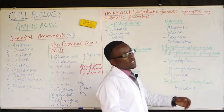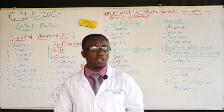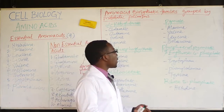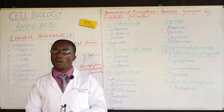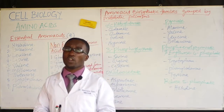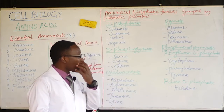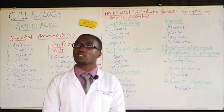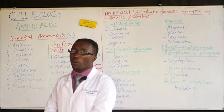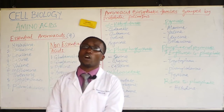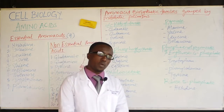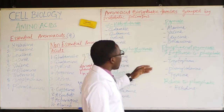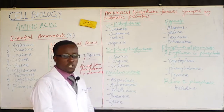Pyruvate is a common figure in metabolism and an important precursor in carbohydrate metabolism. It is one of the key byproducts in the glycolytic pathway and is shunted into the Krebs cycle for further ATP generation — where 32 ATP molecules are formed. From pyruvate, amino acids like alanine, valine, leucine, and isoleucine are derived.